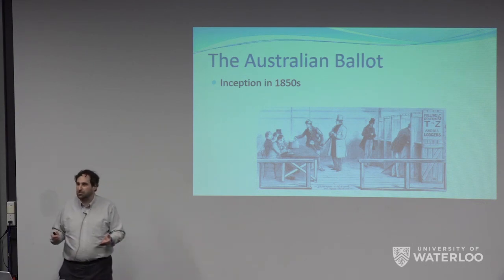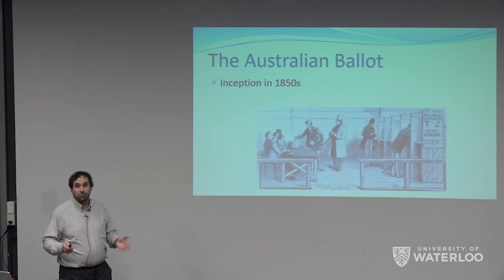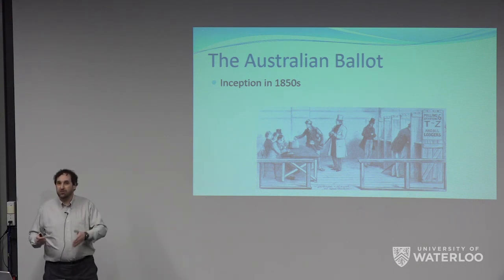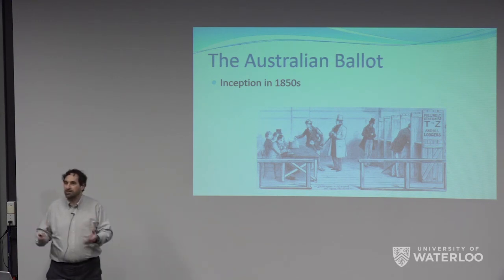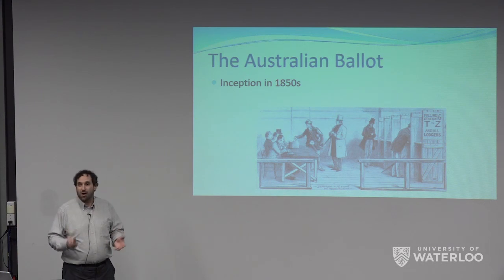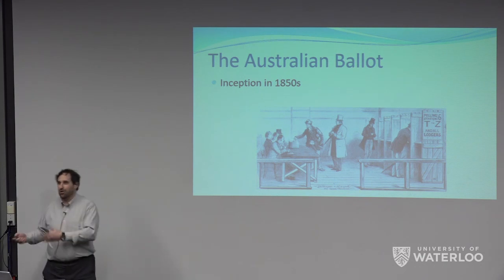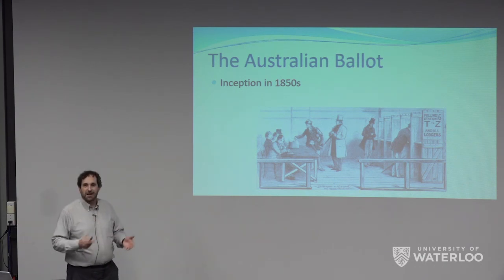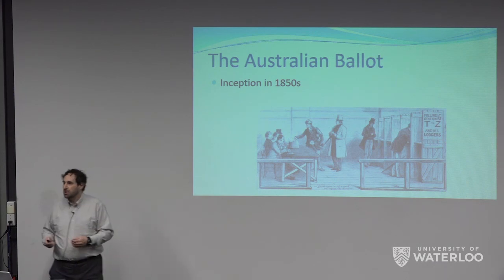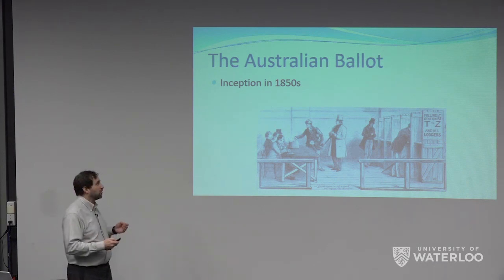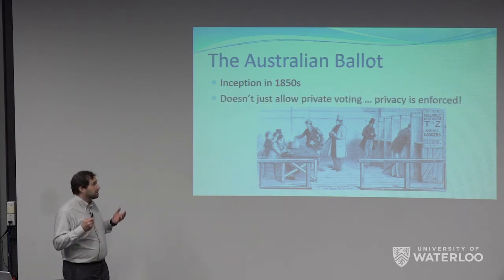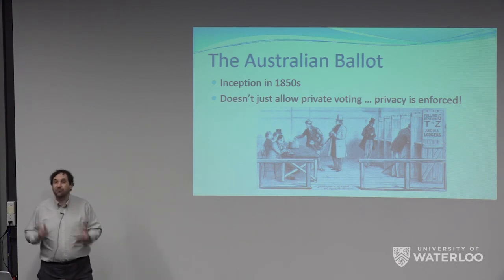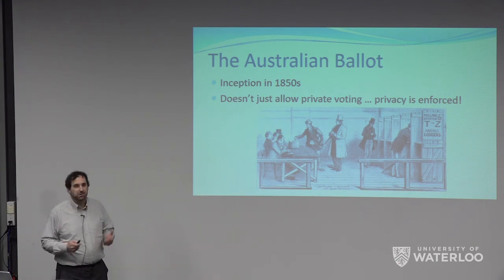The first Canadian elections after Confederation — John A. MacDonald was elected without the benefit of a secret ballot. It was just a few years later in the early 1870s that the Australian ballot, the secret ballot, was widely adopted in Canada. It took the U.S. about 20 more years — the 1890s — before it became standard. The 1892 election in the U.S. was the first where the Australian ballot was used. It does more than just allow private voting — it enforces private voting.